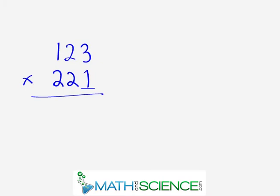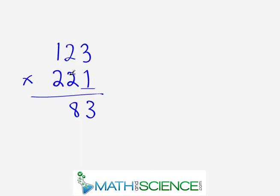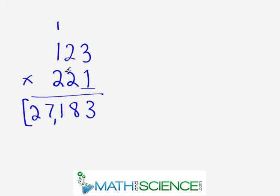Our next problem is 123 times 221. There are no zeros here, so it'll be a little more involved, but not much more difficult. Start in the right-hand column: three times one gives us three. Next, do a crisscross: three times two is six, plus one times two is two — six plus two gives us eight. Now the three-way crisscross: three times two is six, plus one is seven, plus two times four is four — that gives us 11. Write one and carry one. Leading two columns crisscross: two times two is four, plus two is six, plus the carried one is seven. Write seven. Finally, two times one gives us two. Answer: 27,183.